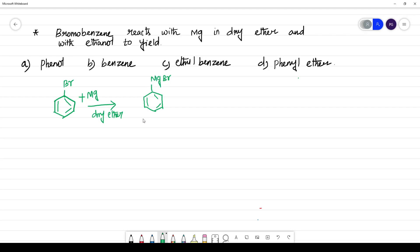MgBr. What is MgBr? It is Grignard reagent. This is C6H5MgBr, Grignard reagent.